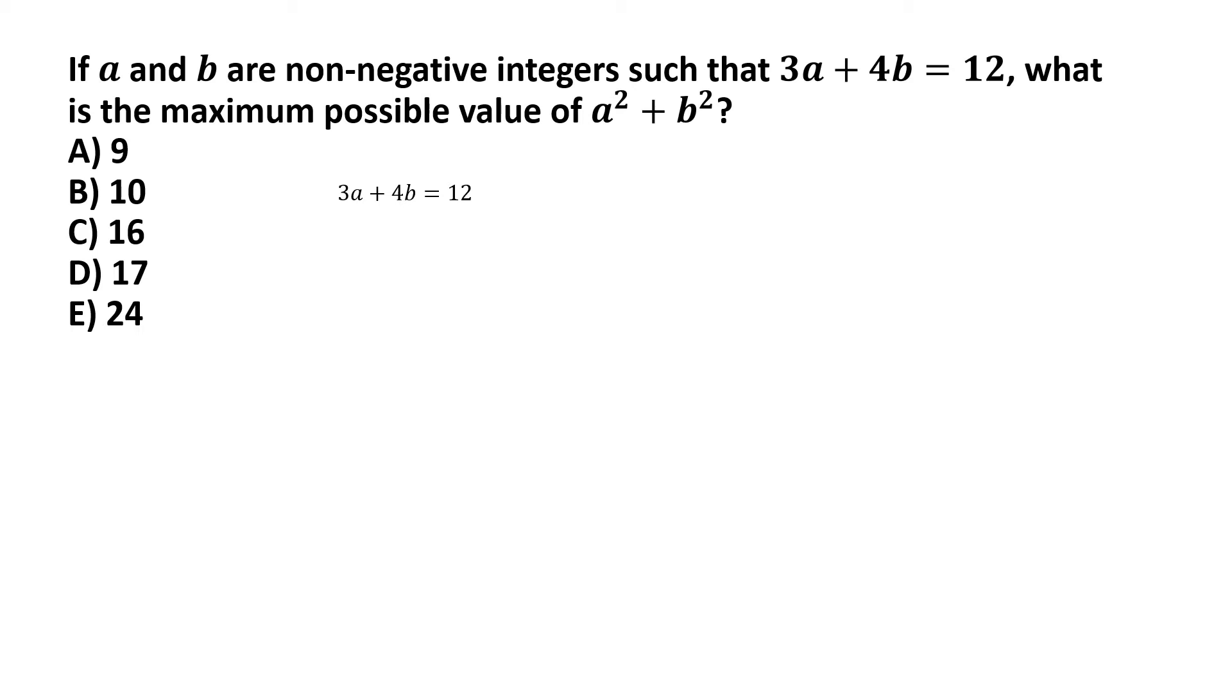So, if you look at this constraint, the linear constraint that's given 3a plus 4b is equal to 12. Let me start with the variable b because that has got a larger coefficient, though it doesn't matter in this case. If you start with the variable a and follow the same approach, that will also be correct. But let me just start with the variable b.